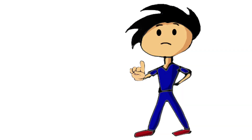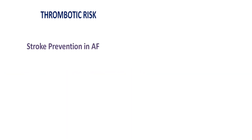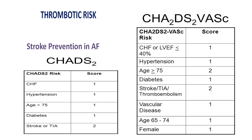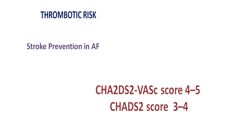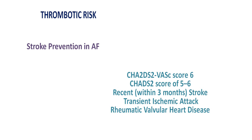Before we discontinue warfarin, we must consider the thrombotic risk. Patients are normally under warfarin for specific reasons. Risk for patients taking warfarin for atrial fibrillation can be predicted with the CHADS or CHA2DS2-VASc score. Patients with CHA2DS2-VASc score of 2–3 or CHADS score of 0–2 with no prior stroke or TIA are low risk. Those with CHA2DS2-VASc score of 4–5 or CHADS score of 3–4 are moderate risk. Patients with CHA2DS2-VASc score above 6, or CHADS score of 5–6, with recent stroke within 3 months, TIA, or rheumatic valvular heart disease are high risk.